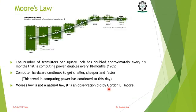In 1965, Gordon Moore stated that the number of transistors per square inch has doubled approximately every 18 months — that is, computing power doubles every 18 months, meaning the number of transistors becomes double after every one and a half years. Later on, this statement became known as Moore's law.